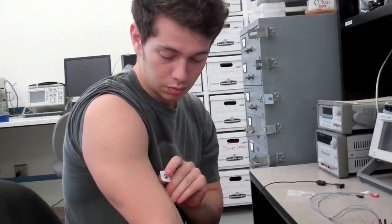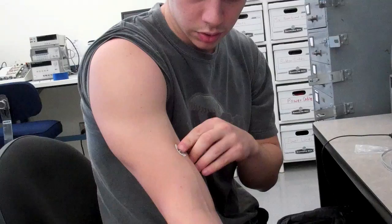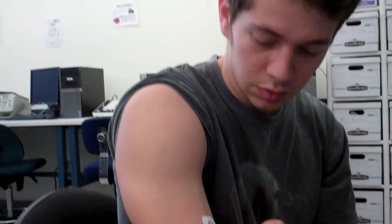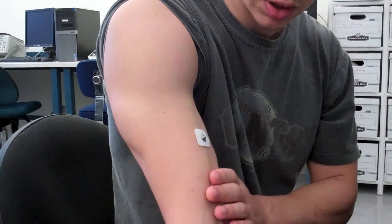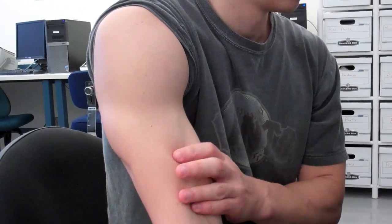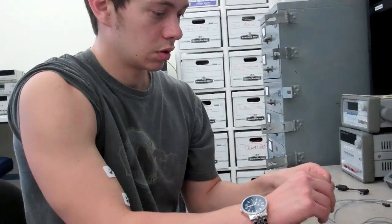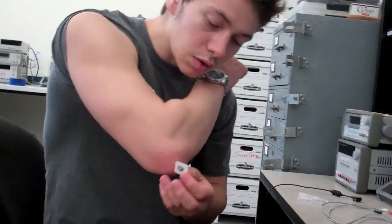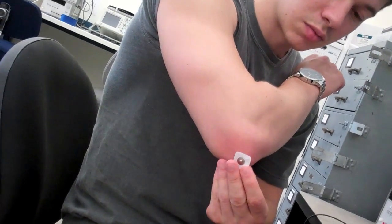I'm putting the electrodes on. You do one in the center of the muscle, another one on the end of the muscle, where now I'm targeting the bicep, and then a third one. This will be the ground electrode, and I'm going to put it on a bony surface like my elbow.